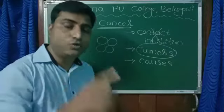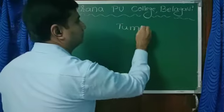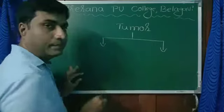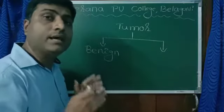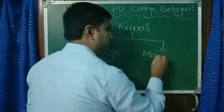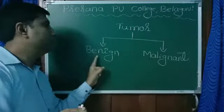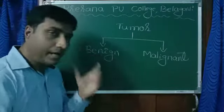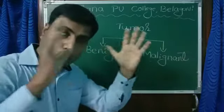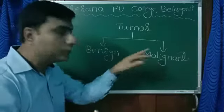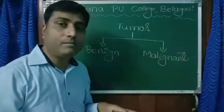Tumors are of two types — a frequently asked question in examinations. The first is benign tumor and the second is malignant tumor. Benign tumor is restricted to one particular part of the body; it will not spread throughout the body, which is why it is less dangerous. Opposite to that, in malignant tumor, the tumor starts spreading to all other parts of the body and becomes uncontrollable — very dangerous.